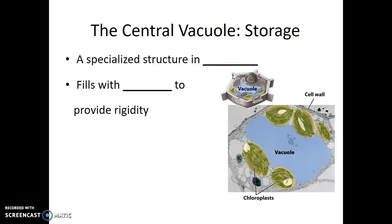One of the last organelles we'll talk about in the endomembrane system is found only in plant cells — the central vacuole. The primary function of the central vacuole is to store water for the plant so it can use that water when it needs to photosynthesize, and also to give support and strength to the cell. The central vacuole fills with water to provide rigidity to the plant and supply water to allow photosynthesis.